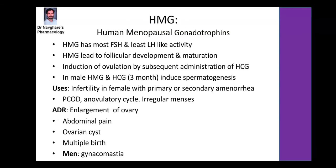Human menopausal gonadotropins (HMG) is another hormone used for induction of ovulation. HMG acts mainly as FSH, leading to follicular development and maturation, and ovulation is induced by subsequent administration of HCG. HMG is used in infertility, primary and secondary amenorrhea, PCOD, anovulatory cycle, and irregular menses.